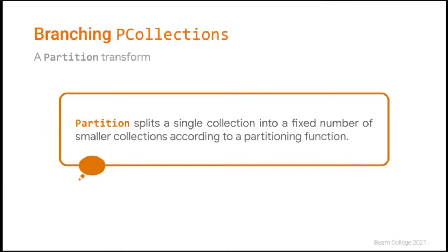There is a final way to branch P-collections: use the Partition transform, which is another one of the Apache Beam core transforms. This transform splits an input P-collection into multiple smaller output P-collections according to a partitioning function. The number of partitions must be determined when the graph is constructed. You can pass the number of partitions as a command line option at runtime to build your pipeline graph, but you cannot determine the number of partitions in the middle of the pipeline based on some data calculation.